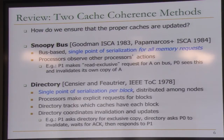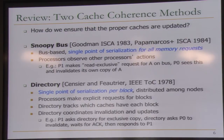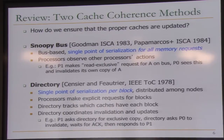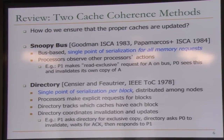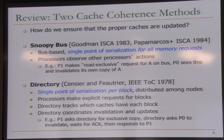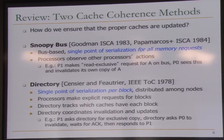The Snoopy bus is bus-based — you have a single point of serialization for all memory requests, and every processor sees every other processor's memory request actions. Caches snoop these requests and decide what to do with a cached block. We saw a very simple protocol — the valid-invalid protocol with two states. Whenever a processor wanted to write to a location, it broadcast a read exclusive signal on the bus, and everybody else invalidated that block in their caches.